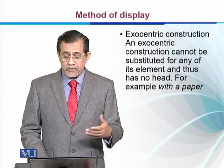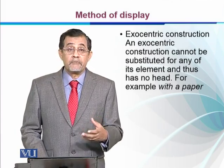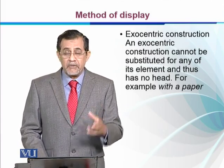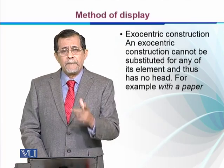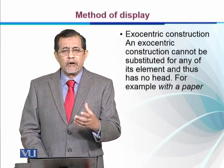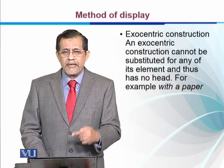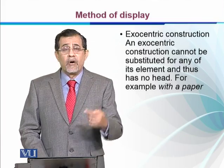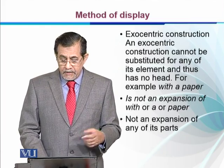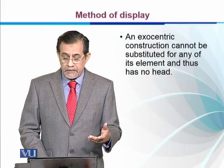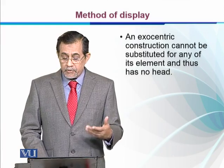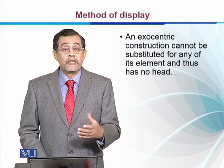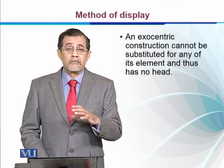An exocentric construction cannot be substituted for any of its elements and thus has no head. For example, 'with a paper' cannot be substituted with any of its elements — not with 'with,' not with 'a,' and not with 'paper.' So it is not an expansion of any of its parts. An exocentric construction has no head, and in exocentric expansion there is no head.